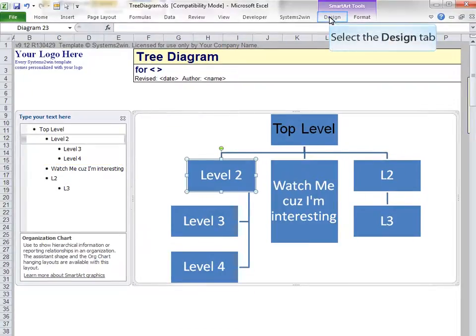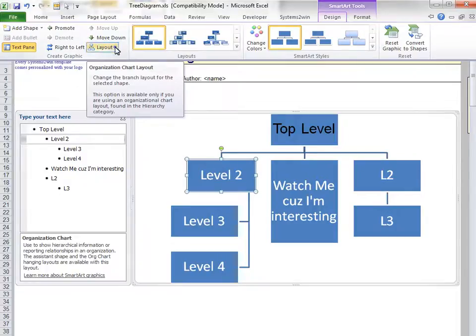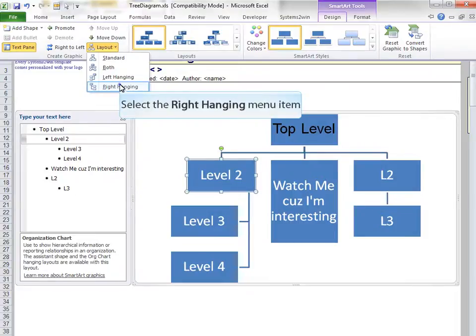Now in the SmartArt Tools Design tab, you will always want to choose the Organization Chart layout. Now for any selected branch, you can select the Layout drop-down list and choose how you want that branch to be formatted.